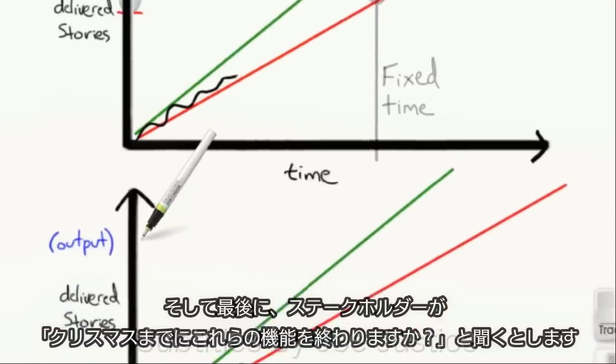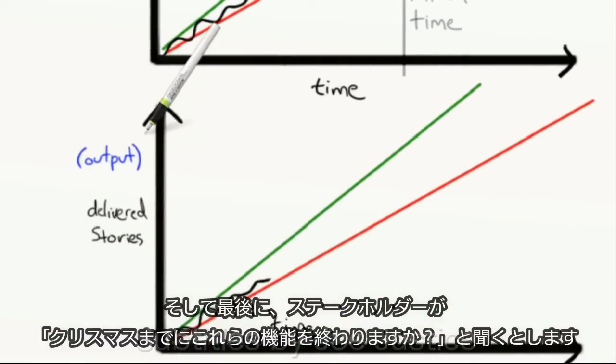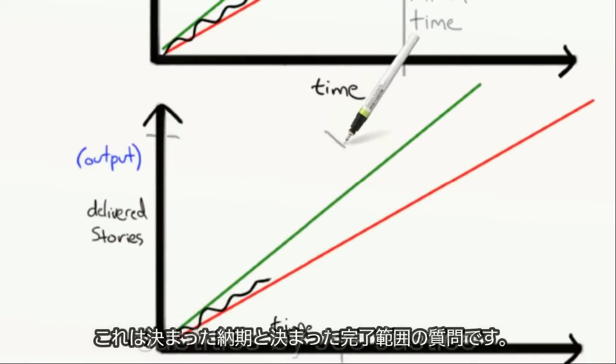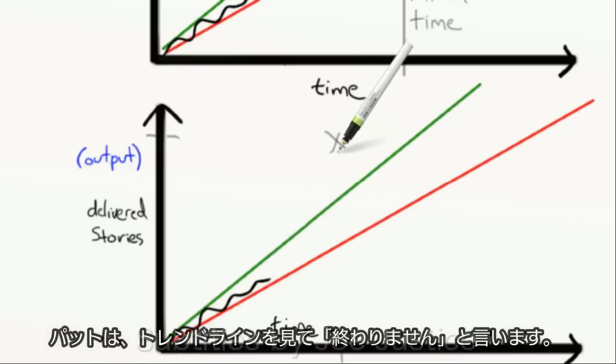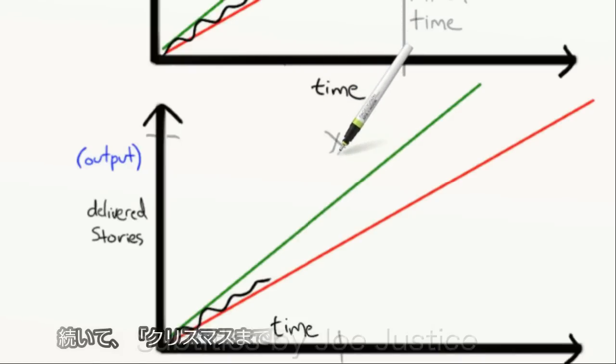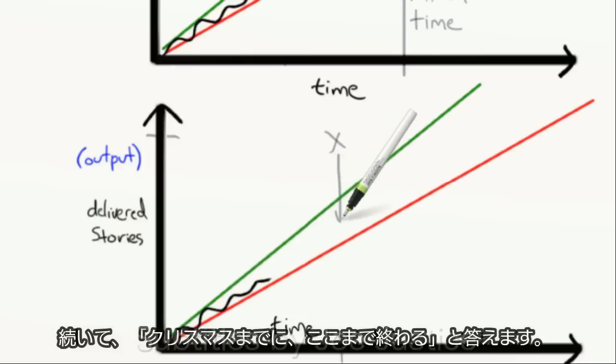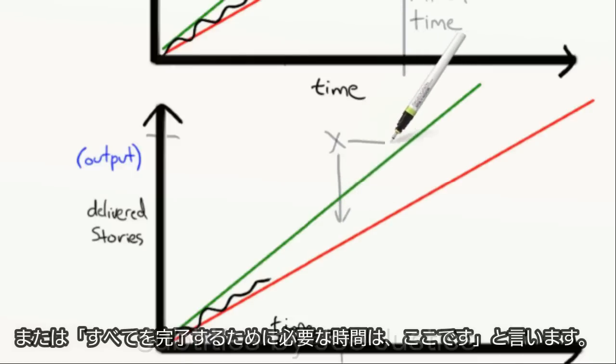And finally, suppose the stakeholders say, can we get these features by Christmas? Now that's a fixed time, fixed scope question. Looking at trend lines, Pat says, nope, sorry, ain't gonna happen. Followed by, here's how much we can get done by Christmas, or here's how much more time we would need to get everything done.